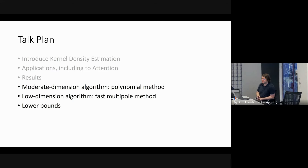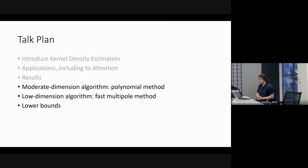I'm going to first tell you about the moderate dimension algorithm, which uses a technique called the polynomial method — one of my favorite algorithmic techniques. Then I'll tell you about the low-dimensional algorithm, which uses the fast multipole method. The fast multipole method has been around for about 40 years, whereas the polynomial method is relatively new. At the end, I'll tell you how we prove our matching lower bounds.